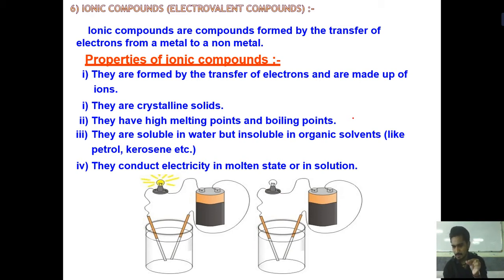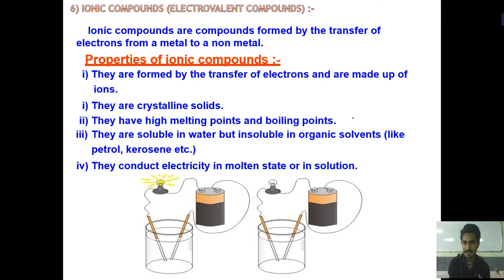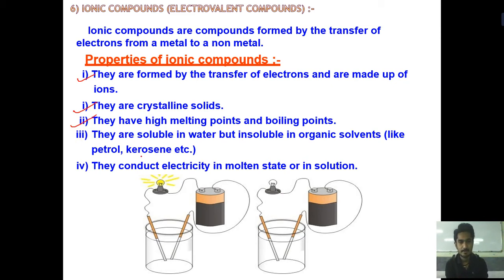Ionic compounds are crystalline solids — they are solid and small, and show a slightly shiny surface, like the salt solids we commonly use. They have very high melting points and boiling points. They are soluble in water but insoluble in organic solvents like petrol, kerosene, etc. — they cannot mix with those solvents.